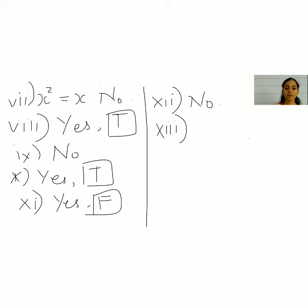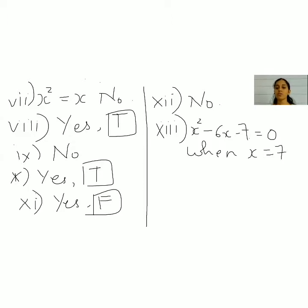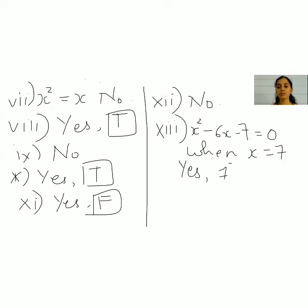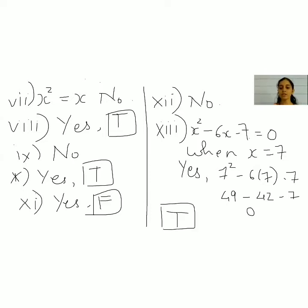The thirteenth: x squared minus 6x minus 7 equals 0 when x equals 7. They have clearly mentioned the condition when x is 7, so yes, it is a statement. To find the truth value, we substitute 7 into the equation: 7 squared minus 6 times 7 minus 7 equals 49 minus 42 minus 7, which is 7 minus 7, giving zero. So yes, it is a statement and its truth value is true.